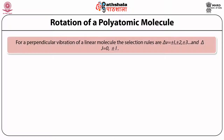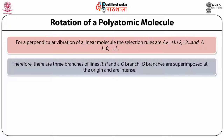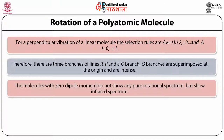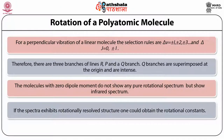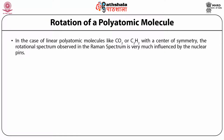For a perpendicular vibration of a linear molecule, the selection rules are delta_nu = ±1, ±2, ±3 and delta_J = 0, ±1. Therefore, there are three branches of lines: R, P, and a Q branch. Q branches are superimposed at the origin and therefore are intense. The molecules with zero dipole moment do not show any pure rotational spectrum but show infrared spectrum. If the spectra exhibit rotationally resolved structure, one could obtain the rotational constants. In the case of linear polyatomic molecules like CO2 or C2H2 with a center of symmetry, the rotational spectrum observed in the Raman spectrum is very much influenced by the nuclear spins.